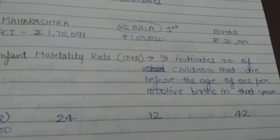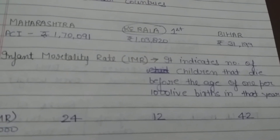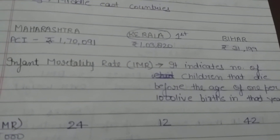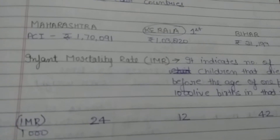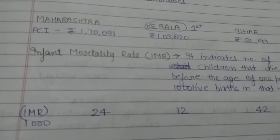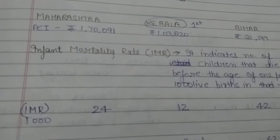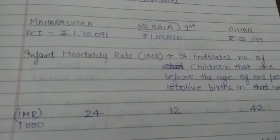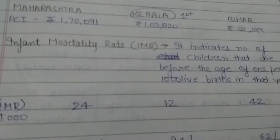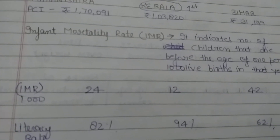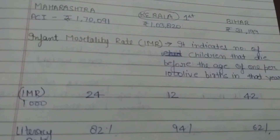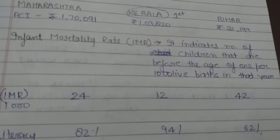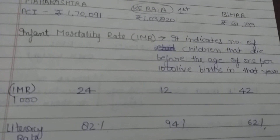IMR per 1,000 live births: Maharashtra 82, Kerala 94, and Bihar 62.